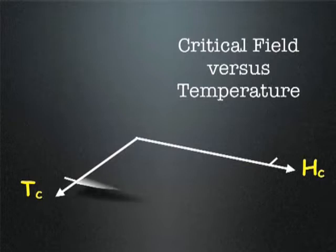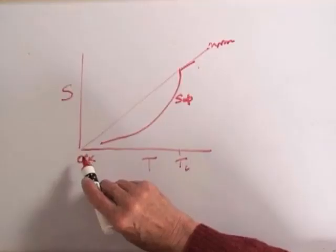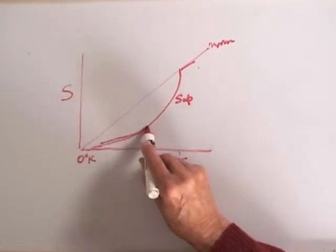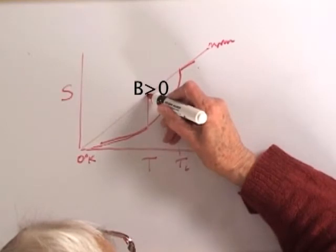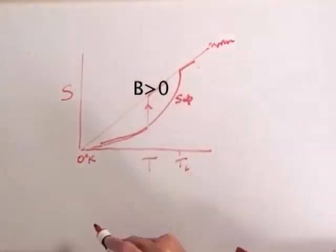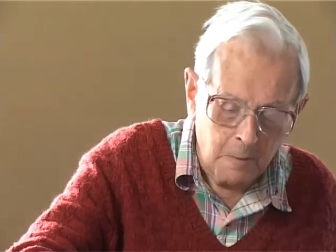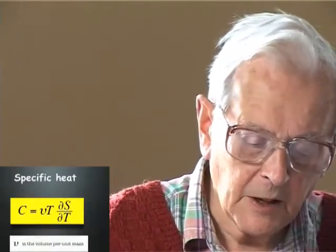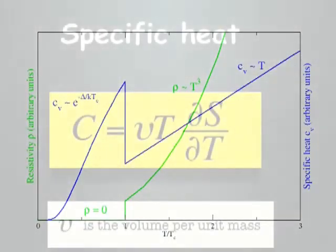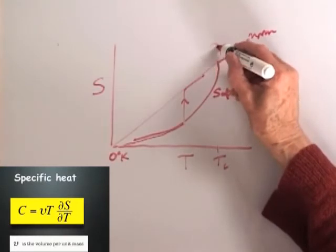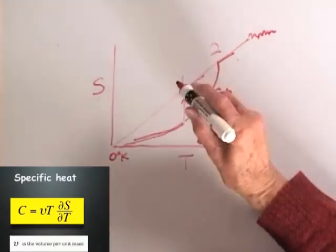When you apply a magnetic field, the transition takes place at a lower temperature. Running up the superconducting state, at a certain point it suddenly can't manage anymore. So there is a discontinuity in entropy, and therefore a latent heat of absorption. The specific heat of the metal is effectively the derivative of entropy with temperature. This zero-field case is called a second-order transition, and the field-driven case is called a first-order transition.